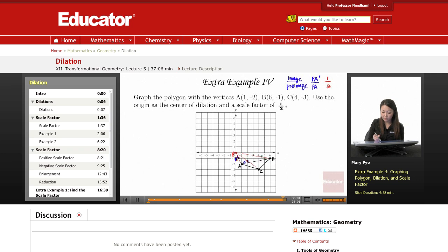If this whole thing is 2, I have to find halfway. So if this is down 1, then it's only going to be down a half, because remember, it's half of that. So down a half.